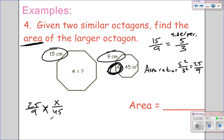Cross-multiply, 1125 equals 9x, divide by 9, so x equals 125 inches squared.